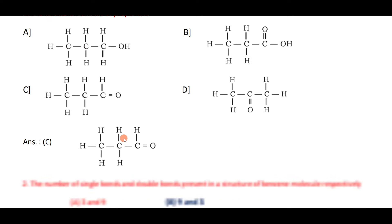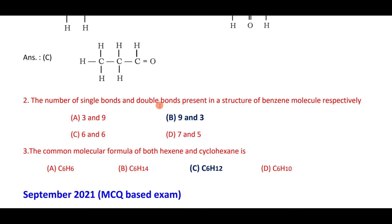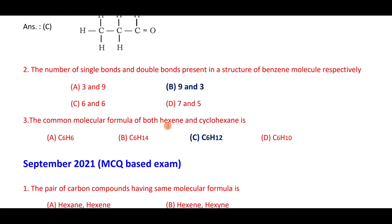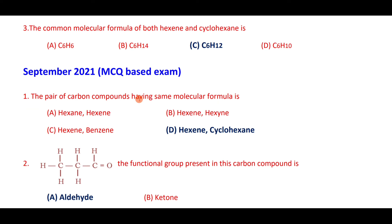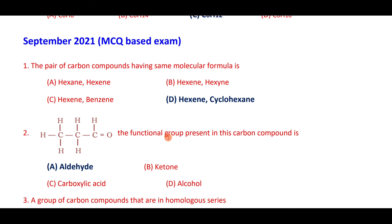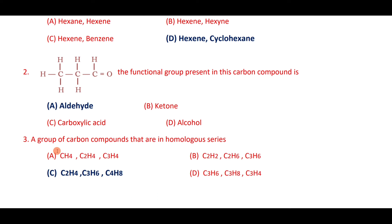The structural formula of propanal has an aldehyde functional group (–CHO) — option C. The number of single bonds in benzene is nine and double bonds is three — option B. The common molecular formula of both cyclohexane and hexene is CₙH₂ₙ, that is C₆H₁₂. The aldehyde functional group is –CHO — option A.